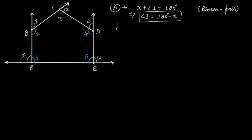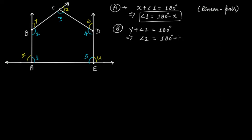From vertex B, Y plus angle 2 is equal to 180 degrees. So from this, we get angle 2 as 180 degrees minus Y.